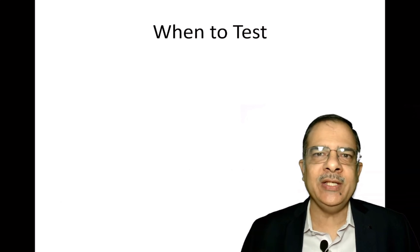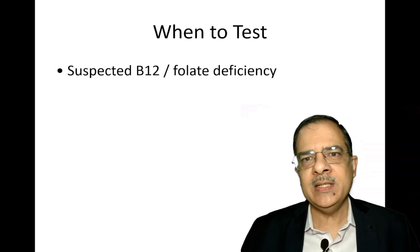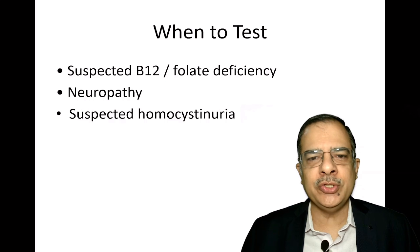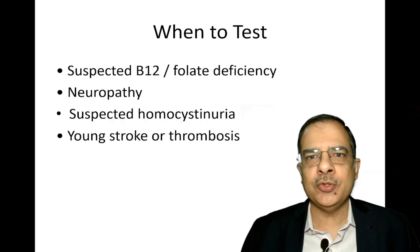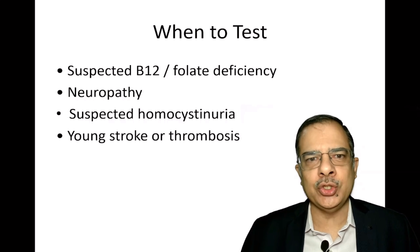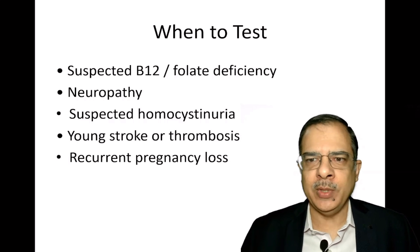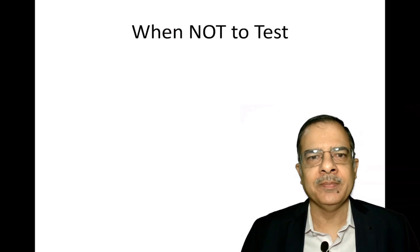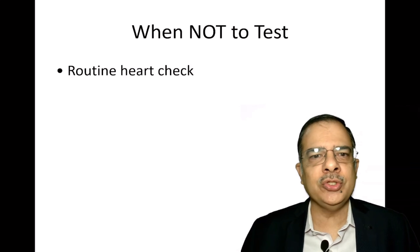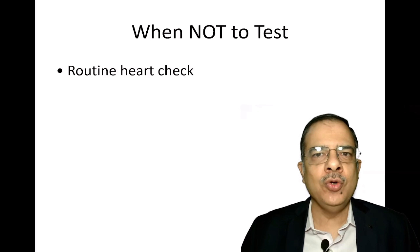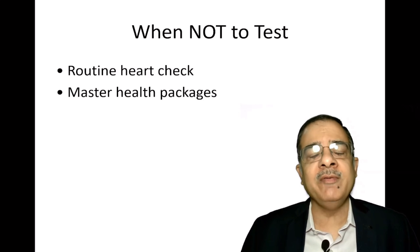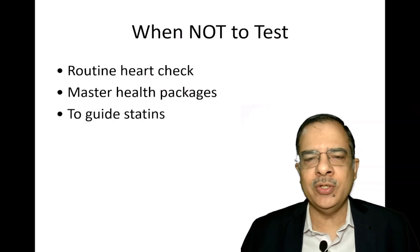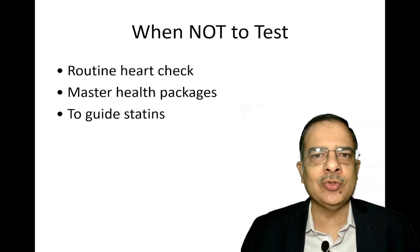When should we test homocysteine levels? When there is suspected B12 or folic acid deficiency, the patient has neuropathy, suspected homocystinuria, stroke or thrombosis at young age, or recurrent pregnancy loss due to thrombosis. When not to test: not as part of a routine health checkup — it creates more confusion as part of a master health package — and never to guide statin dose. It is not used to determine whether to increase the statin dose.